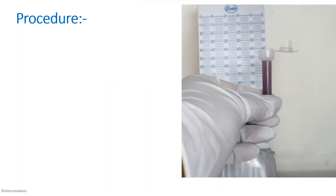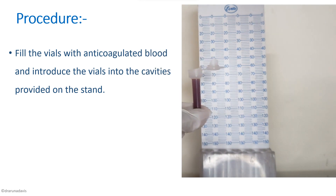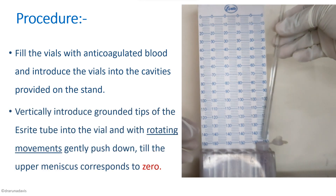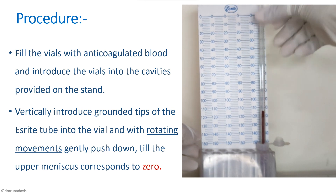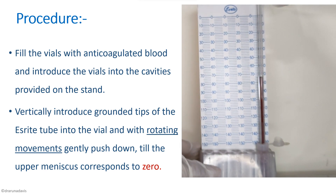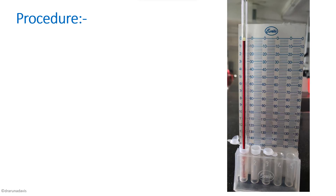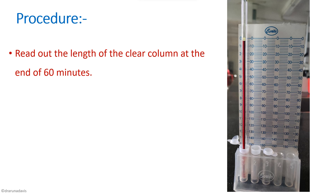For the procedure, anticoagulated blood is taken in the single-use filling vial, which is then introduced onto the cavity present on the stand. The Westergren's tube is vertically inserted into the filling vial and gently rotated while pushing downward so that the blood column rises up to level zero. After that, the tube is left undisturbed for one hour, and at the end of the hour the length of the clear plasma column on top is read. Here one division equals two millimeters, so with two divisions the ESR is four millimeters.